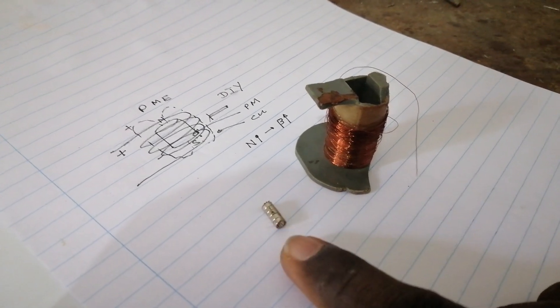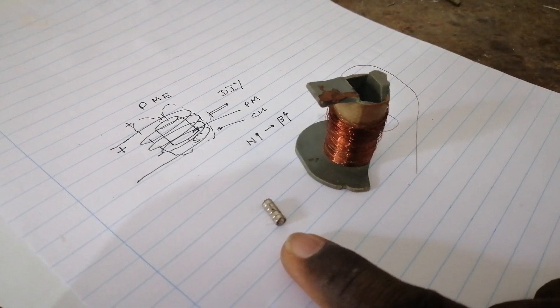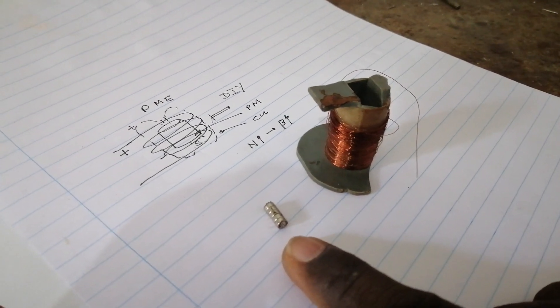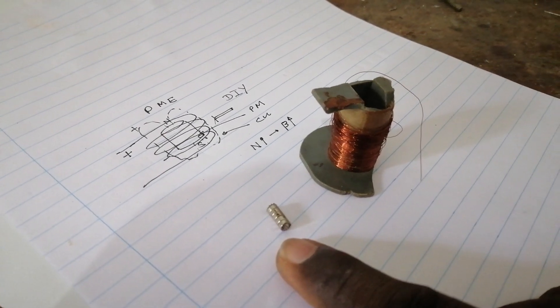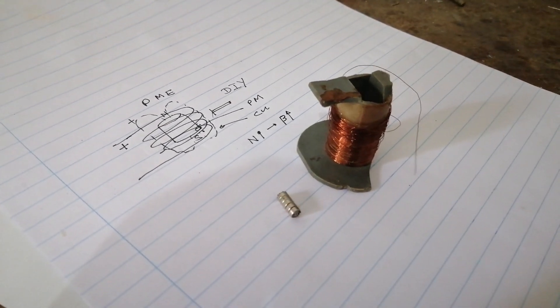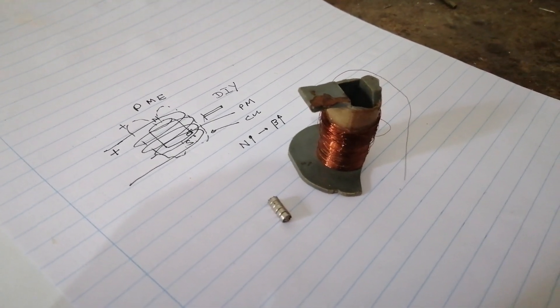So winding a copper wire around this magnet will be a little bit difficult. In order to make it simpler, I'm going to stick a duct tape around the magnet and then on top of the duct tape, I'm going to wound this copper wire.